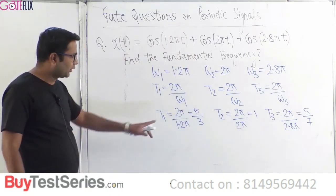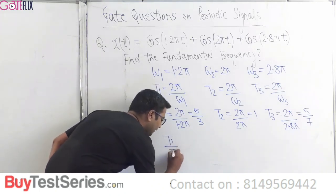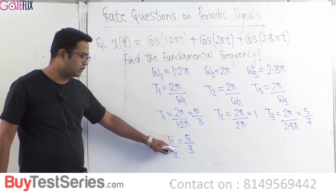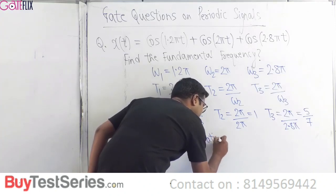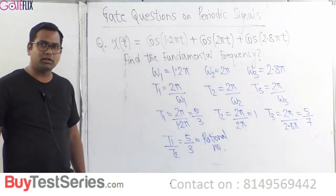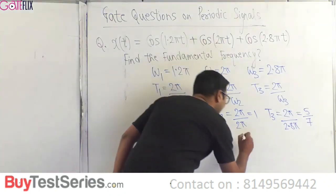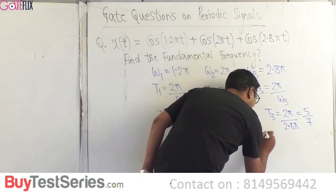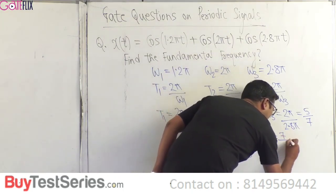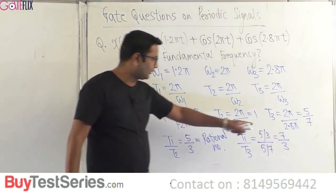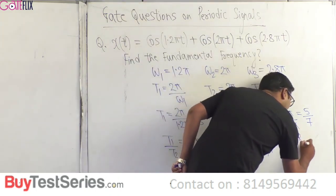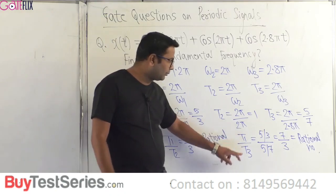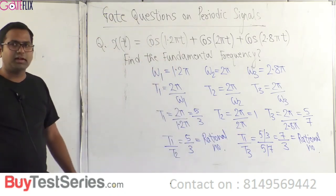To find the combined period, we calculate the ratios. T1/T2 = 5/3, where 5 and 3 are both integers — a rational number. For three signals, we also find T1/T3 = (5/3)/(5/7) = 7/3, where 7 and 3 are both integers — also rational. Since both ratios T1/T2 and T1/T3 are rational numbers, x(t) is periodic. If any one ratio were irrational, the signal would be non-periodic.